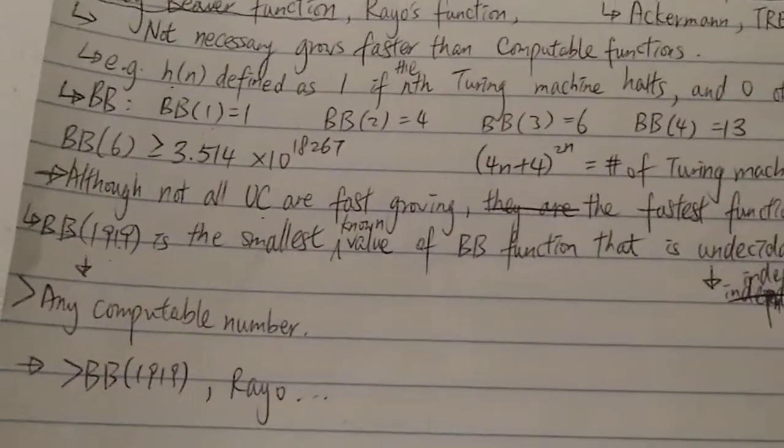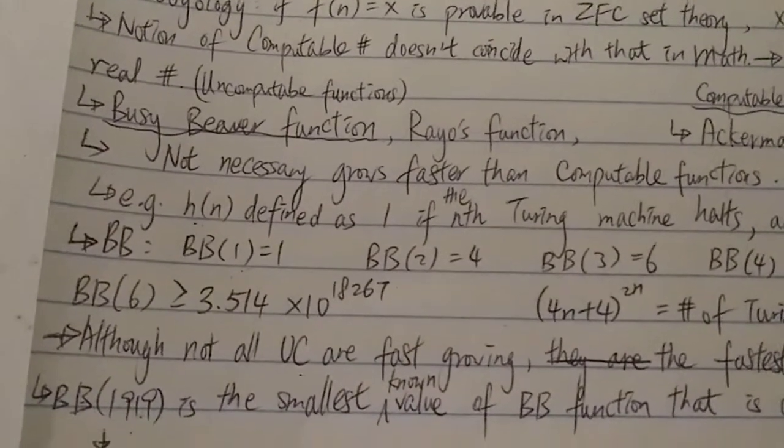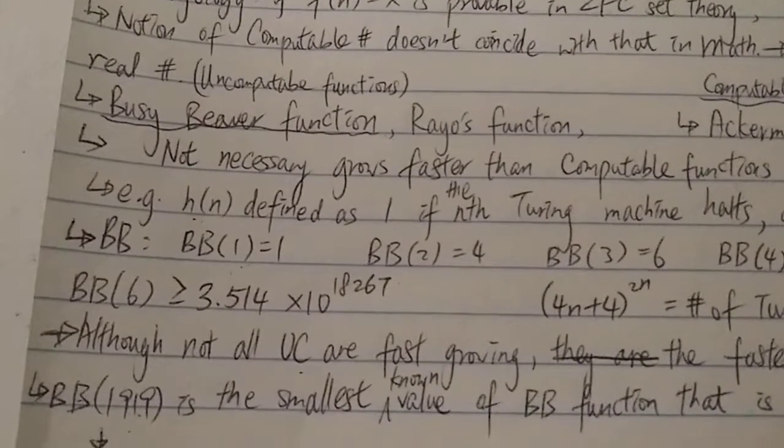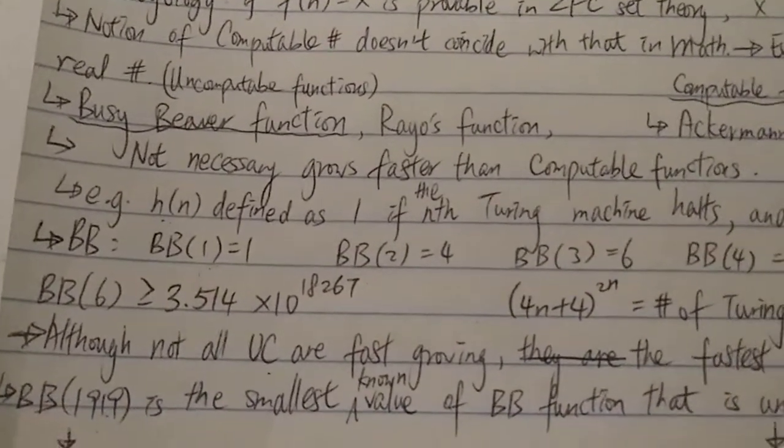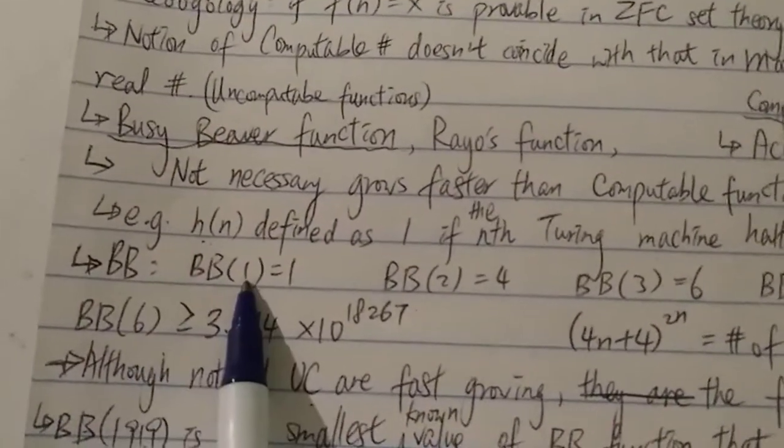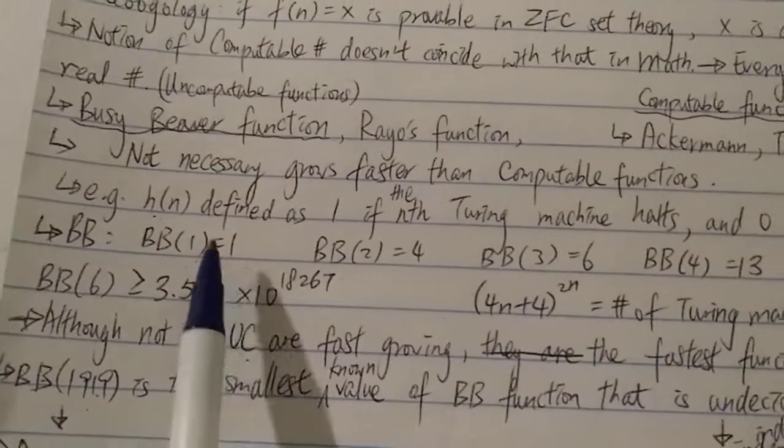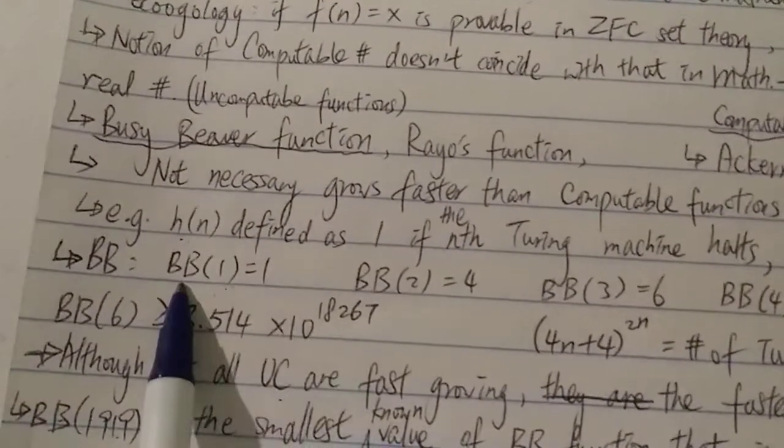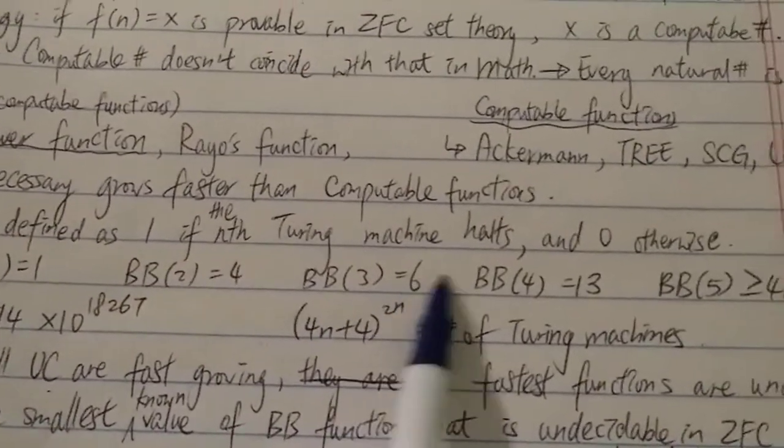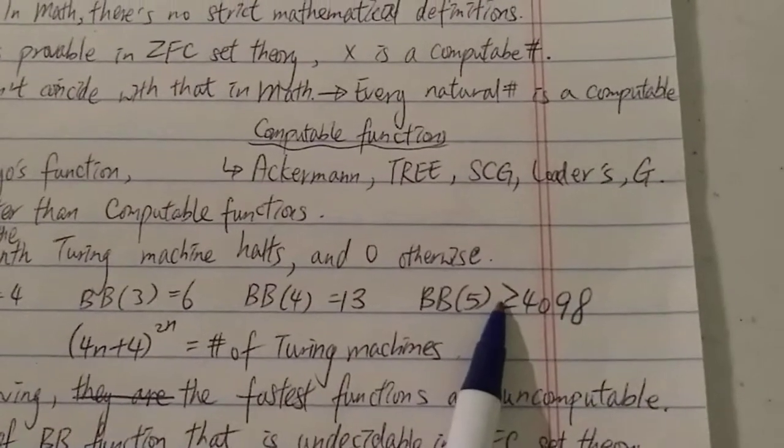Another misconception is that we will never know the output of an uncomputable function. Of course that's not the case. The example would be the Busy Beaver function. We actually know some of the outputs of these Busy Beaver functions: BB(1) = 1, BB(2) = 4, BB(3) = 6, BB(4) = 13.